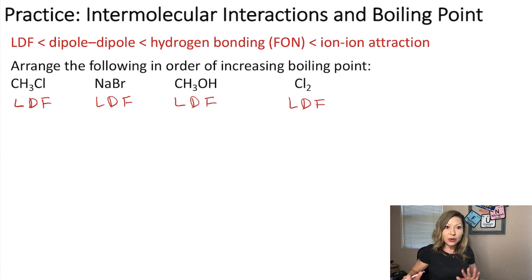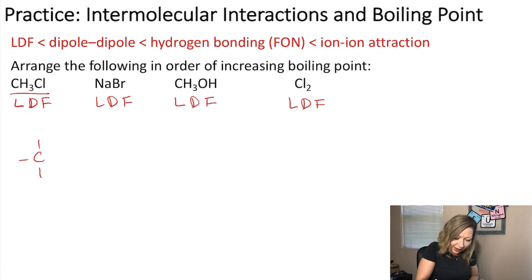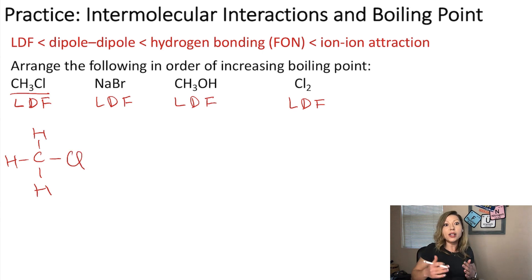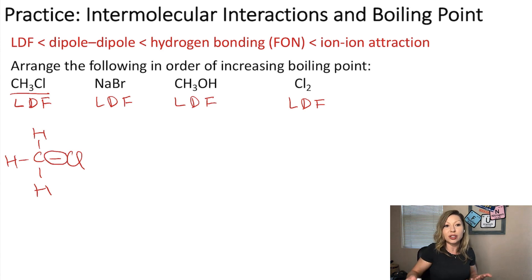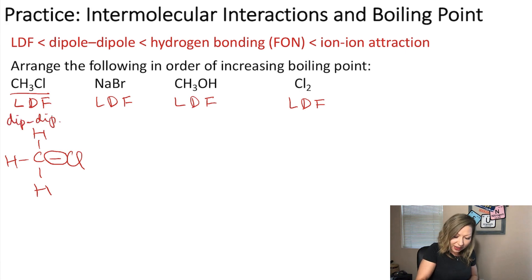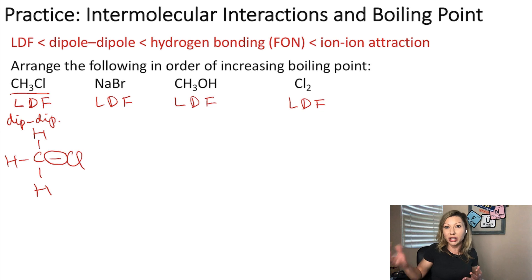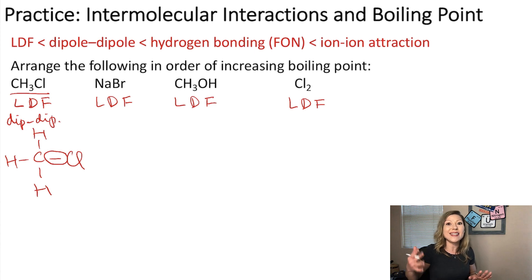Let's look at CH₃Cl. If I draw out its structure, we have bonds between carbon and hydrogen atoms and carbon and chlorine atoms. The carbon-chlorine bond is polar, so we also have dipole-dipole interactions. Do we have hydrogen bonding? Is there fluorine, oxygen, or nitrogen bonded to hydrogen? No, so those are all the intermolecular attractions in CH₃Cl.